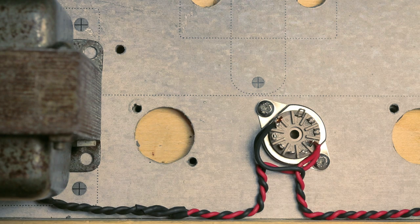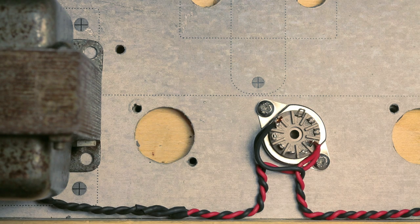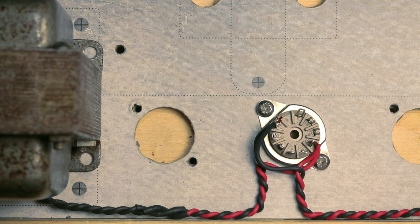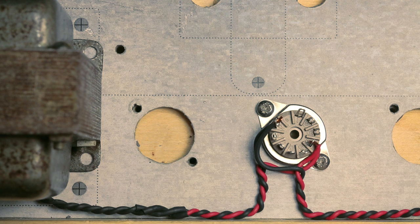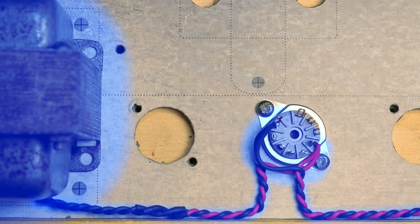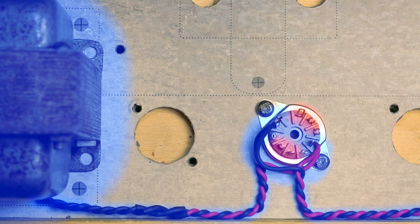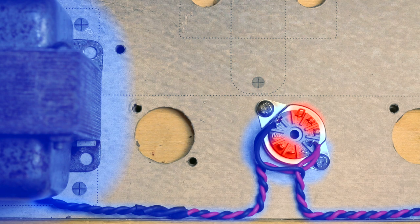This is probably the most common incorrect way that a socket can be wired. The problem here is the loop that goes around the socket. Let's turn on the transformer and have a look at what the magnetic field might look like. Now let's have a look at the sensitive parts of the socket. You can see that the magnetic field encroaches on the grid and plate areas. As this is where the signal is found, it is not ideal.